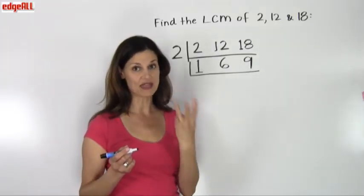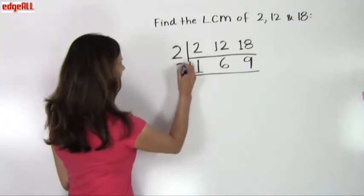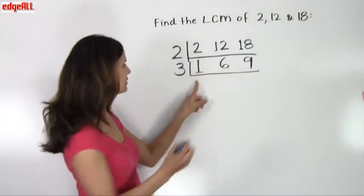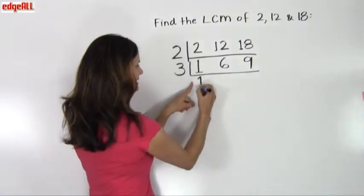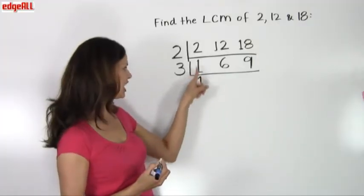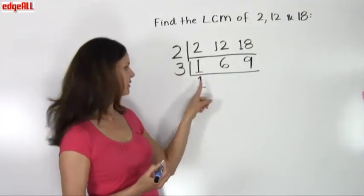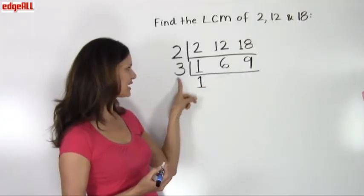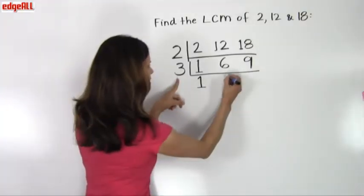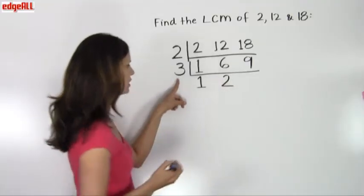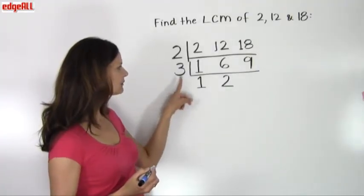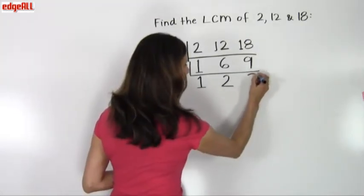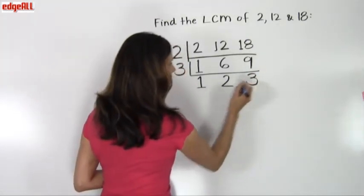I take the 3 and write it to the left of the L shape. I leave the 1 as it is and rewrite it here, since it is not divisible by 3. Then the 6 divided by 3 equals 2, so I place the 2 here. And 9 divided by 3 equals 3, so I place the 3 here.